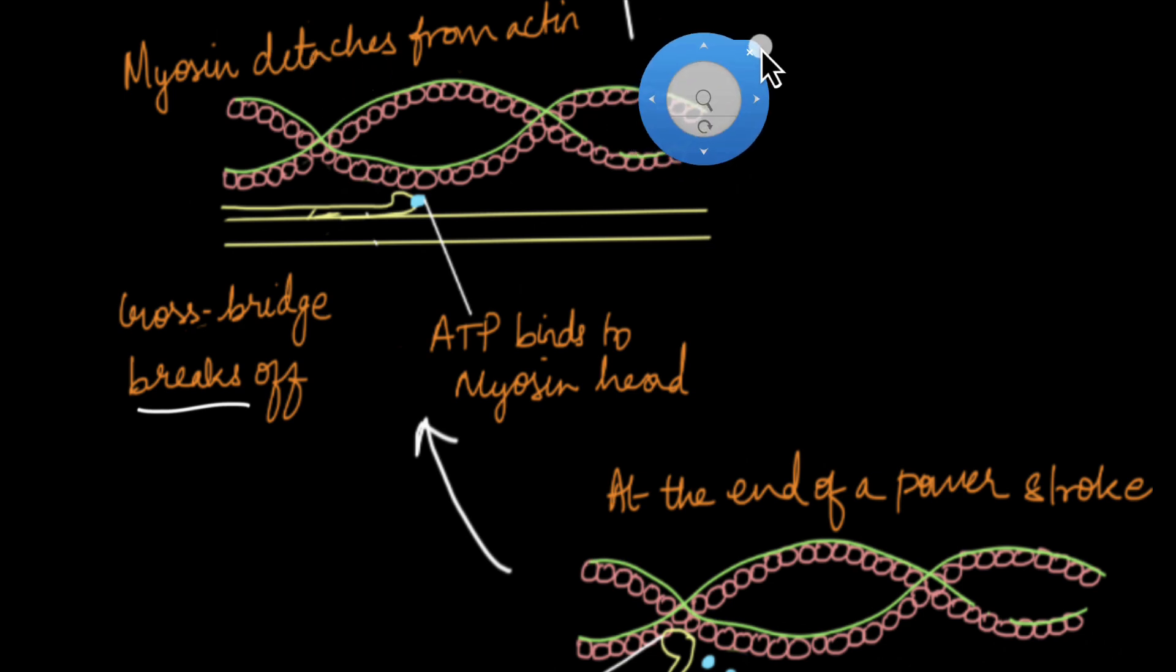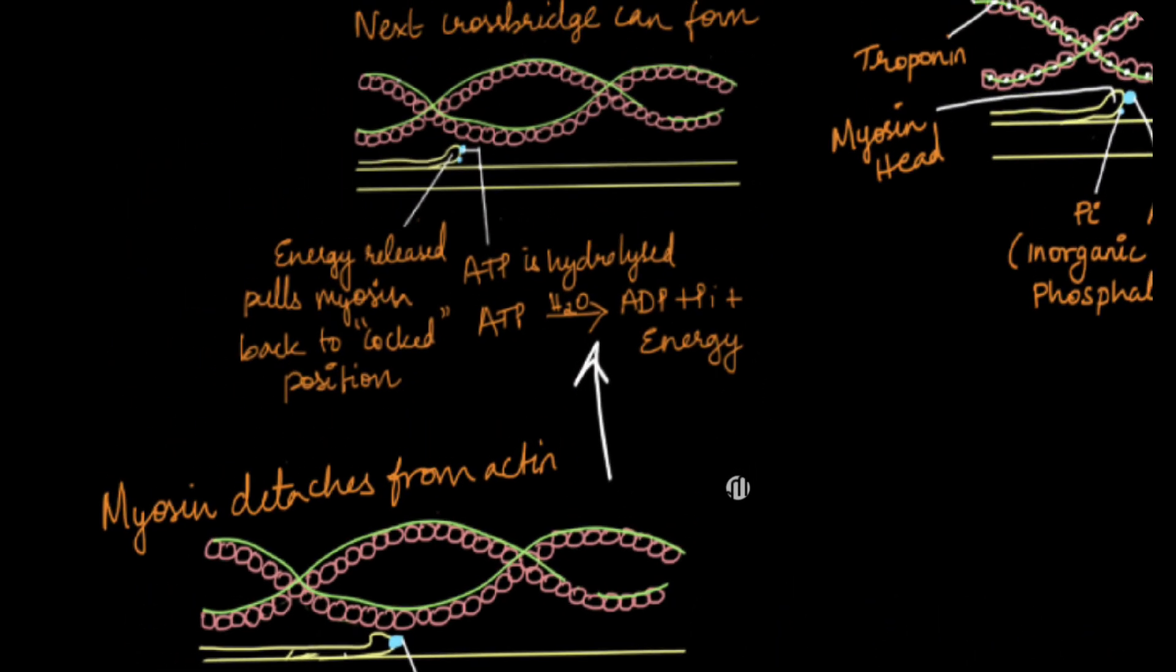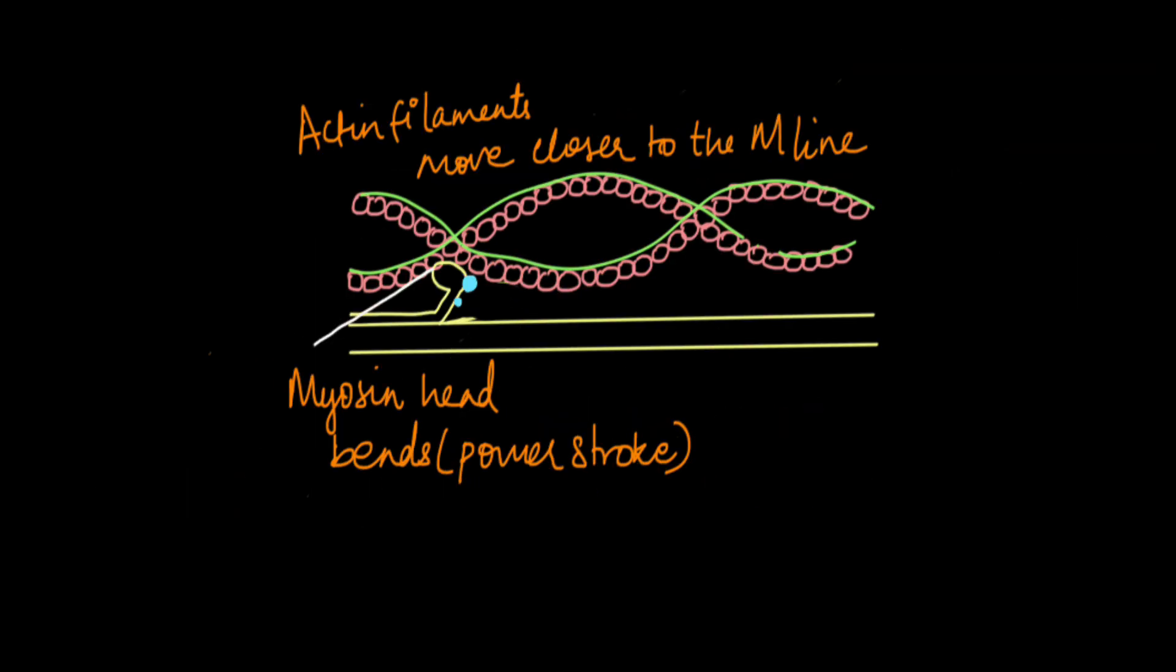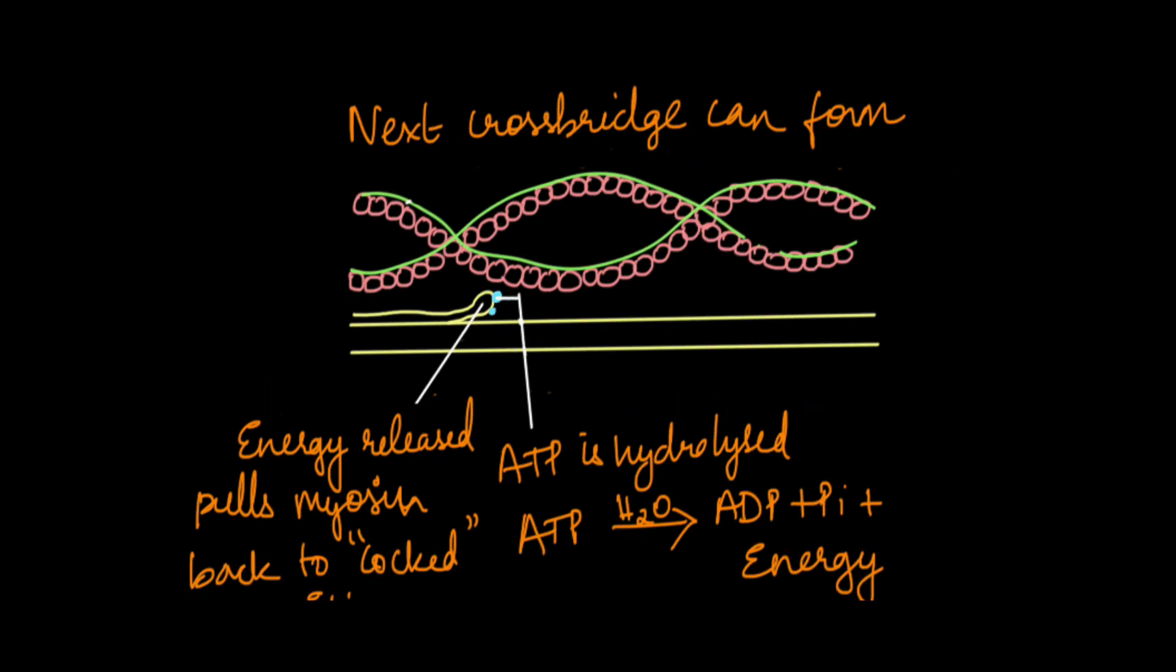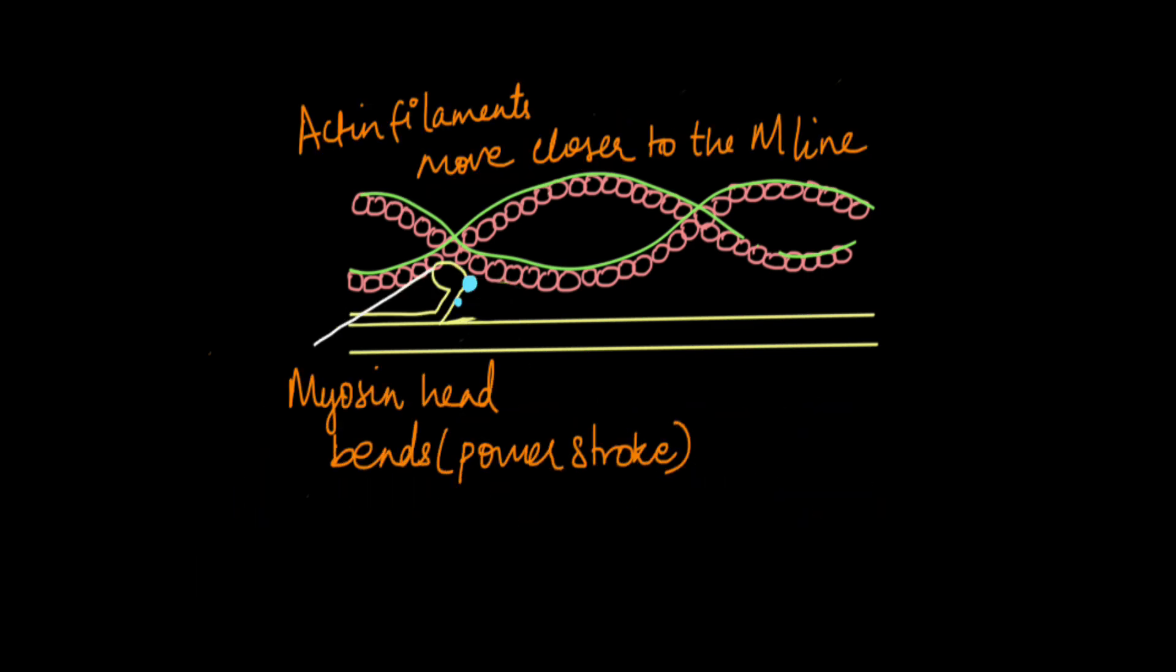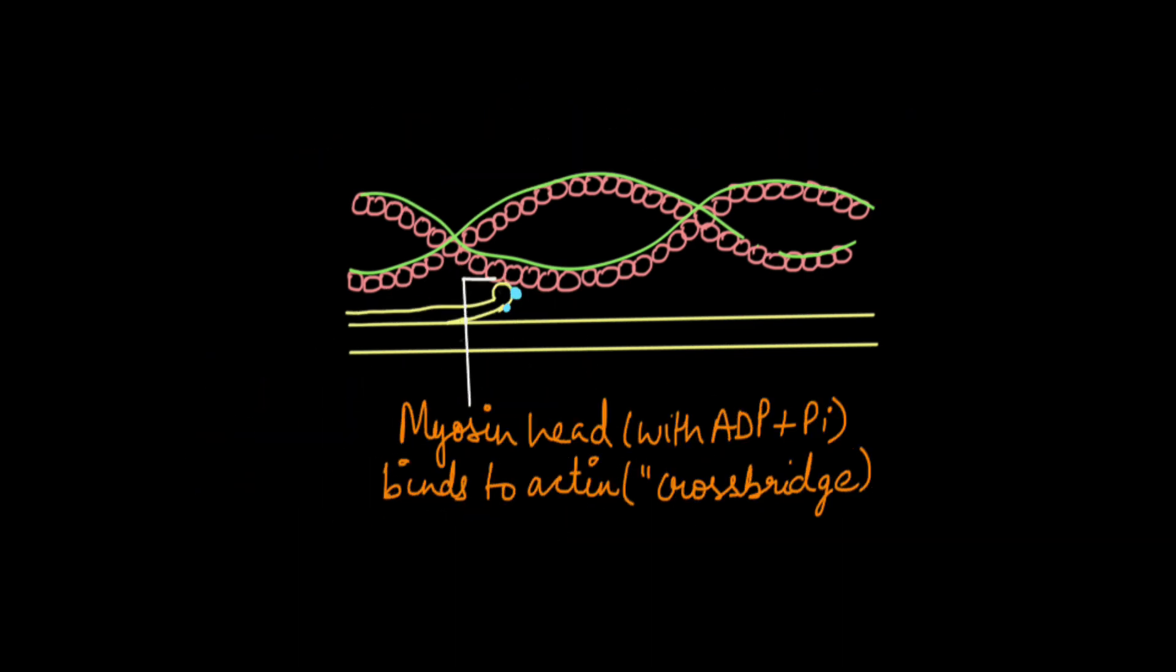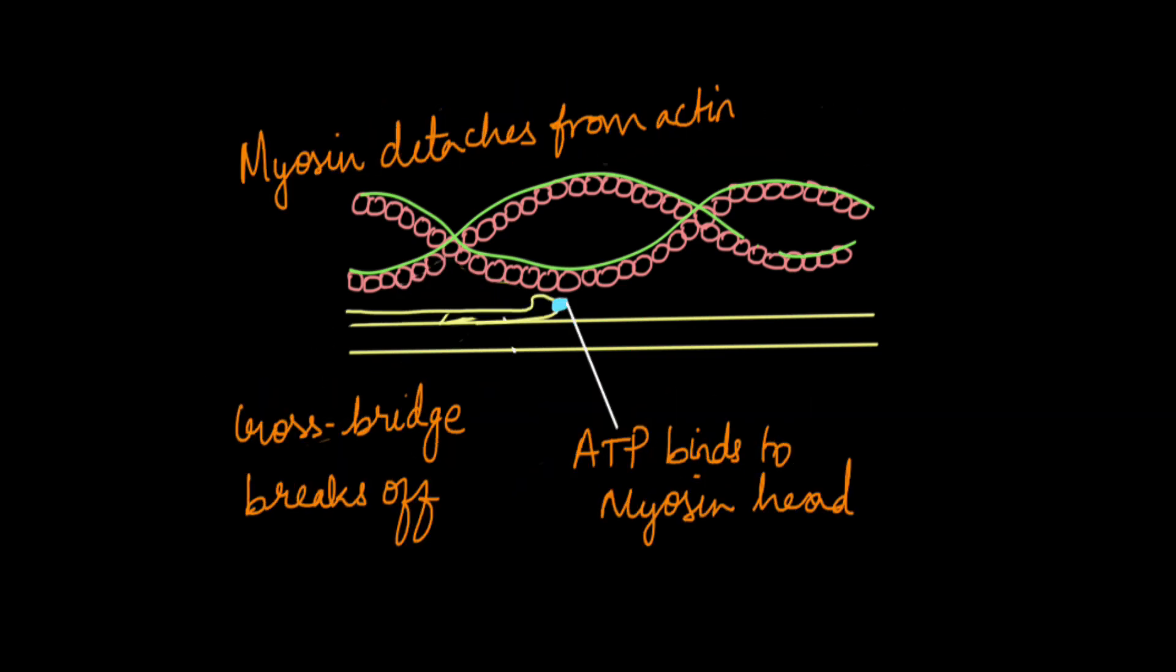Myosin detaches from actin but for the next cross bridge to form, ATP is hydrolyzed to ADP and inorganic phosphate and the energy that is released is used to pull the myosin head to the cocked position. This GIF here explains in a better way how this cross bridge cycle works but basically this cycle is what leads to the muscle contraction and relaxation in our body.